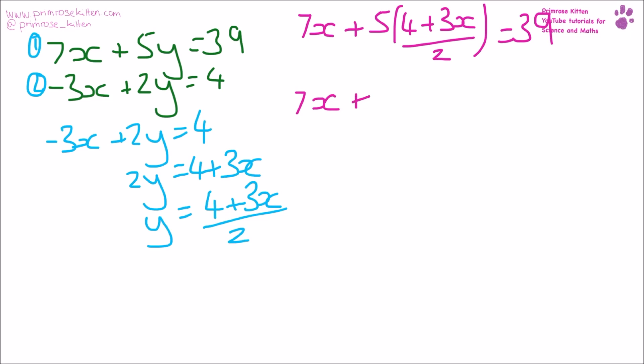So 7x plus 2.5 times 4 plus 3x equals 39. 7x plus 10 plus 7.5x equals 39.